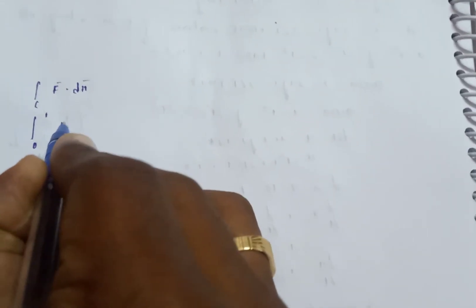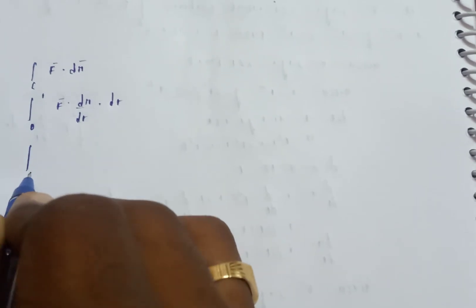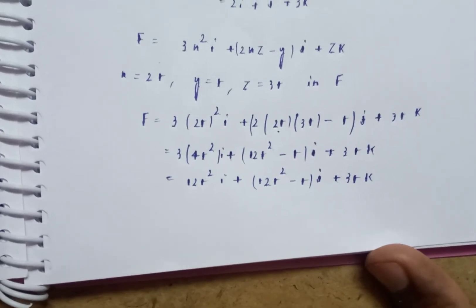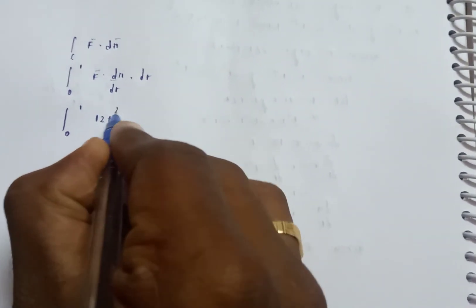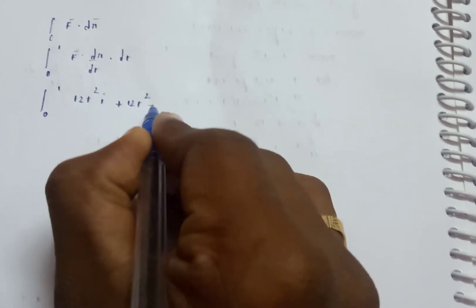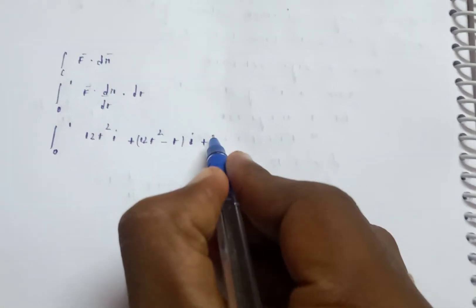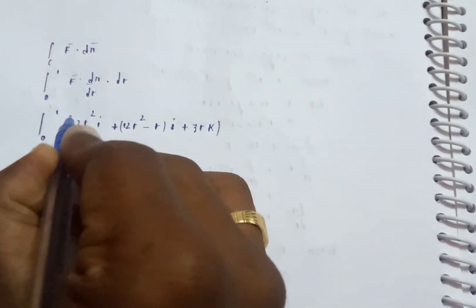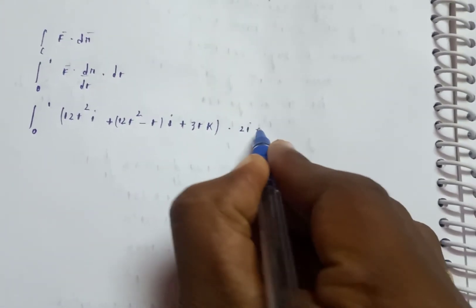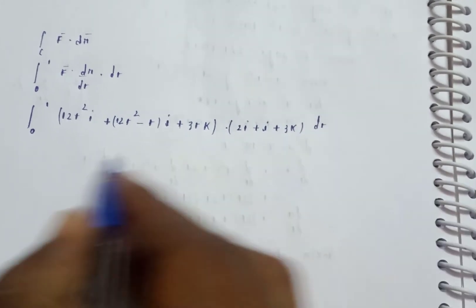The integral from 0 to 1 of F bar dot (dr by dt) dt. So integral 0 to 1 of (12t square i plus (12t square minus t) j plus 3tk) dot (2i plus j plus 3k) dt.